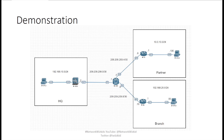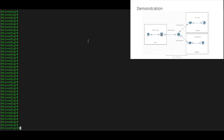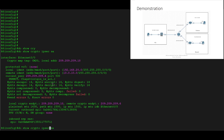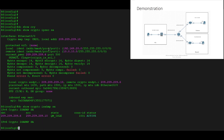You can see the topology on screen. We're going to be configuring the VPN between the ASAv at HQ on the left-hand side and Router 6, which is in the bottom right for the branch. Router 6 already has some configuration for a VPN because it has a VPN established between the branch and the partner. We can see the security associations already configured for that existing site-to-site VPN.